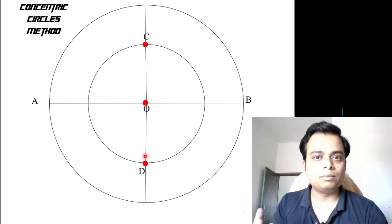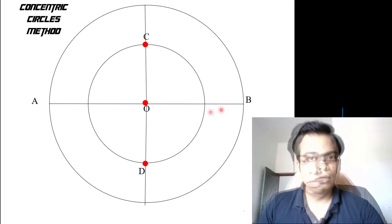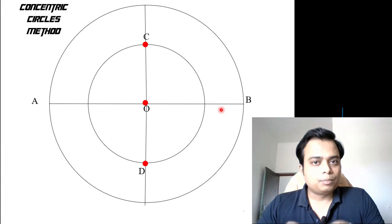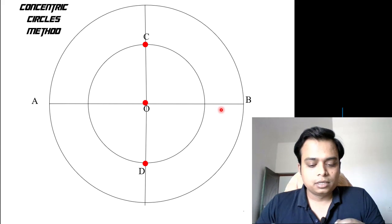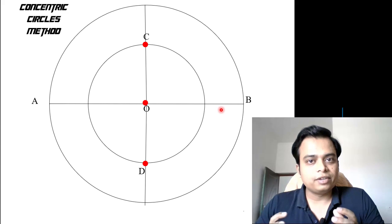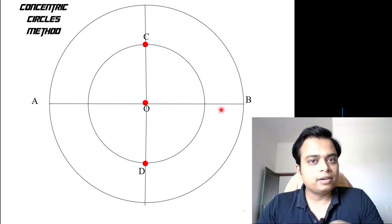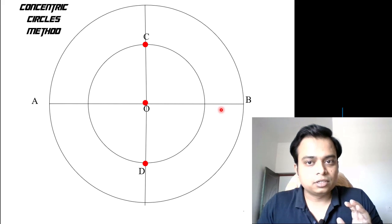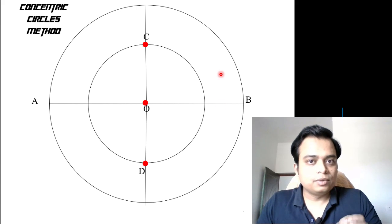The inner circle pertains to the minor axis and the outer circle pertains to the major axis. A circle makes an angle of 360 degrees, and what we'll try to do is divide this circle into 12 equal parts. So 360 divided by 12 gives you 30 degrees. You need to make 30 degree divisions.